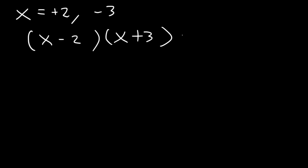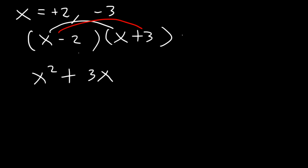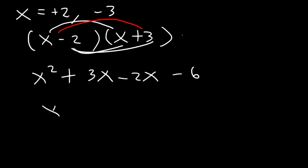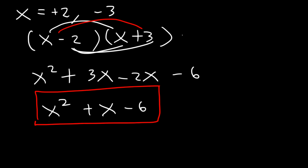After that, you can FOIL it. x times x is x squared. x times 3 is positive 3x. Negative 2 times x is negative 2x. And negative 2 times 3 is negative 6. Now 3x minus 2x is x.